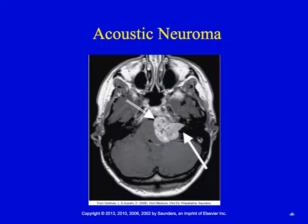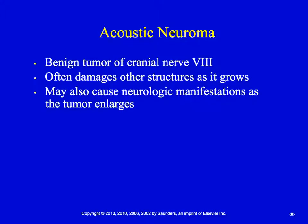Acoustic neuromas are typically benign tumors of cranial nerve 8. They cause damage by impinging on other structures, and can cause hearing loss if putting pressure on the hearing nerves. As they get larger, they can also cause neurological manifestations. These are typically diagnosed with a CT scan, and surgery is needed to remove the tumor to decrease damage to surrounding organs, preserve hearing, and minimize neurological deficits.